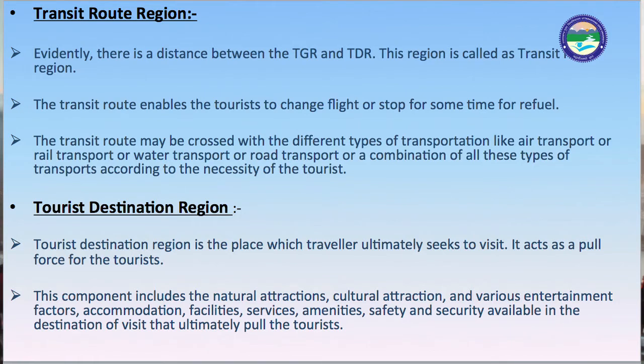The Transit Route Region is the region that links TGR with TDR. There is evidently a distance between the TGR and TDR, and this region is called the Transit Route Region. The transit route enables the tourist to change flight or stop for some time to refuel. The transit route may be crossed with different types of transportation — air, rail, water, or road transportation — or a combination of all these types, according to the necessity of the tourist.